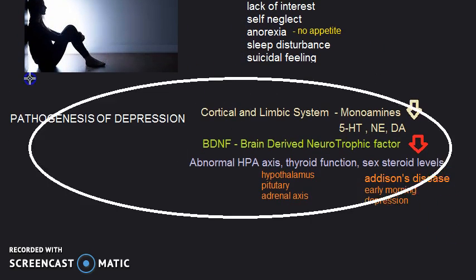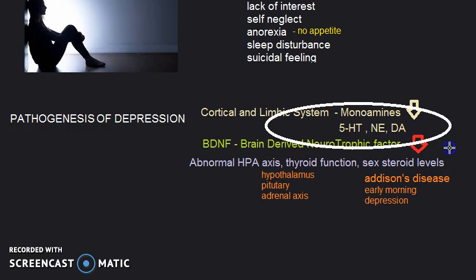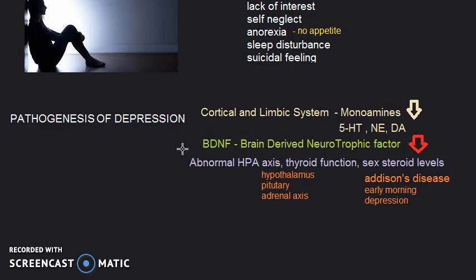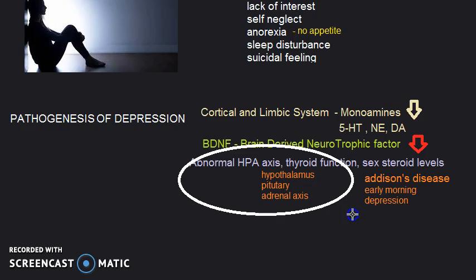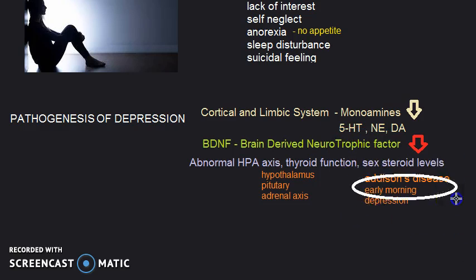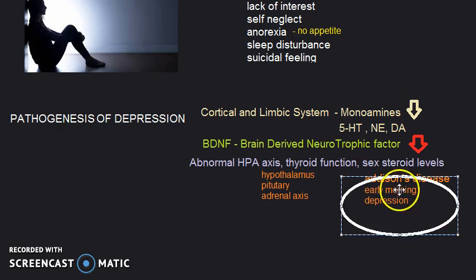Depression can happen because in the cortical and limbic system there is less of monoamines like serotonin, norepinephrine, dopamine, etc. BDNF — that is Brain Derived Neurotropic Factor — is also less. Abnormal HPA levels (hypothalamus-pituitary-adrenal axis), abnormal thyroid function, and abnormal sex steroid levels are also involved.